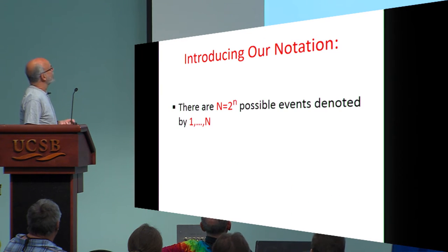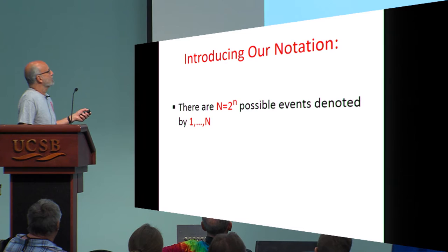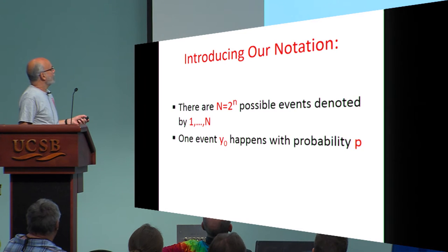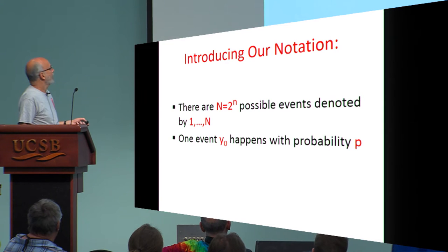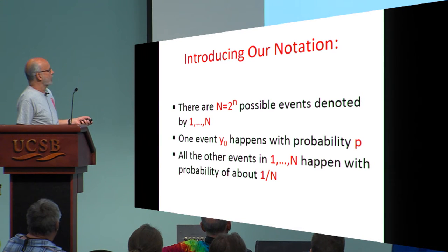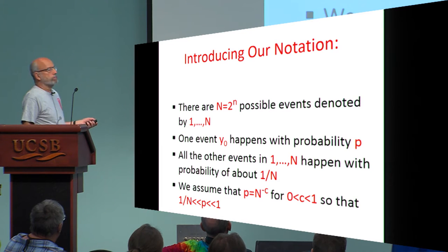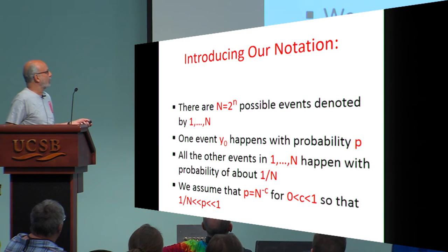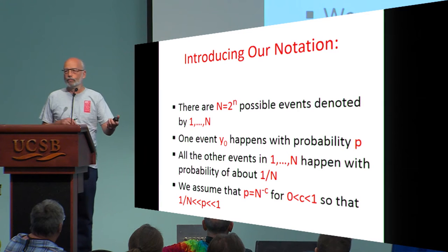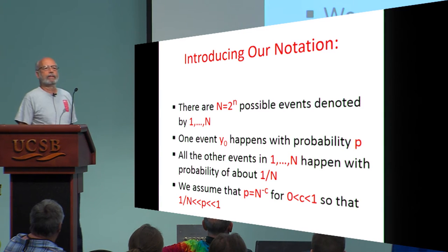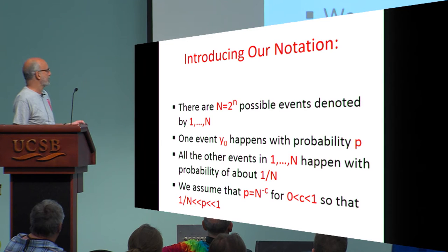Introducing our notation: there are N = 2^n possible events — exponentially many — denoted 1 to N. One particular event, which I denote y₀, happens with a larger than usual probability P. All other events have probability approximately 1/n. Throughout the talk, I assume the probability is n^{-c} for some constant c between 0 and 1 — so it could be square root of n, cube root of n, tenth root of n, and so on. So P is somewhere between 1/n and 1.